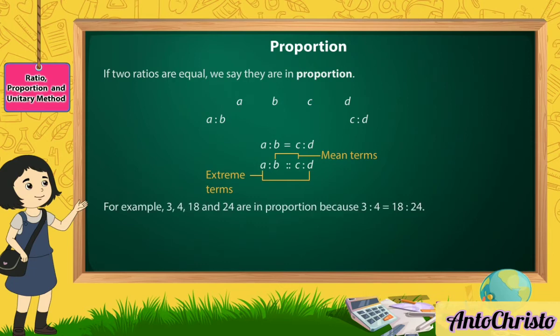For example, 3, 4, 18 and 24 are in proportion because 3 is to 4 is equal to 18 is to 24.